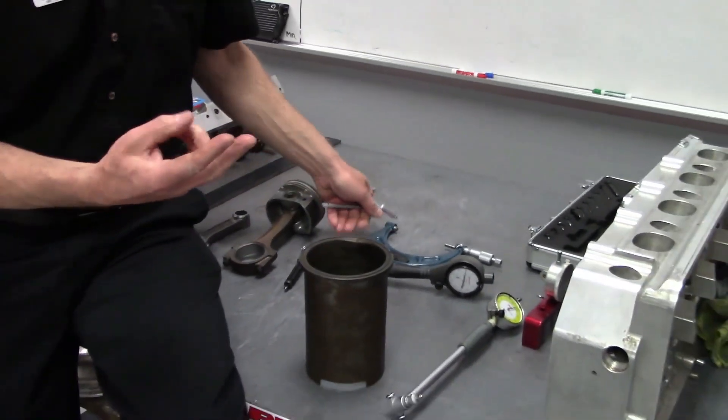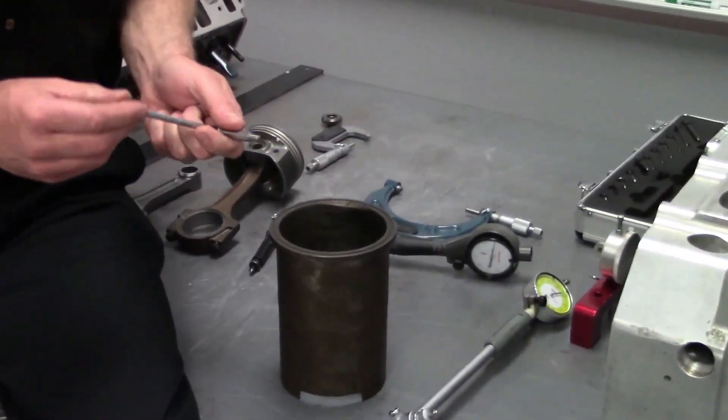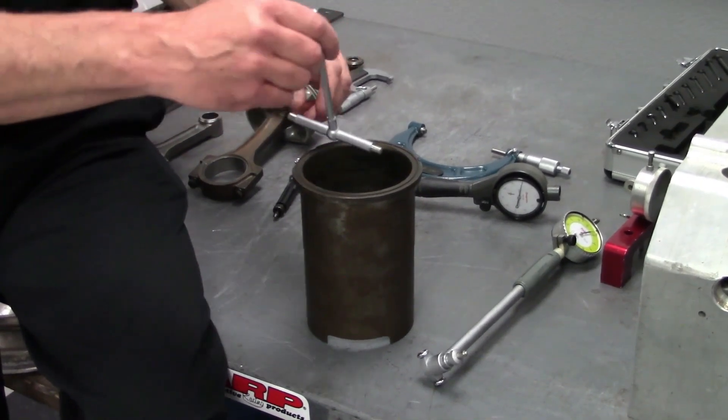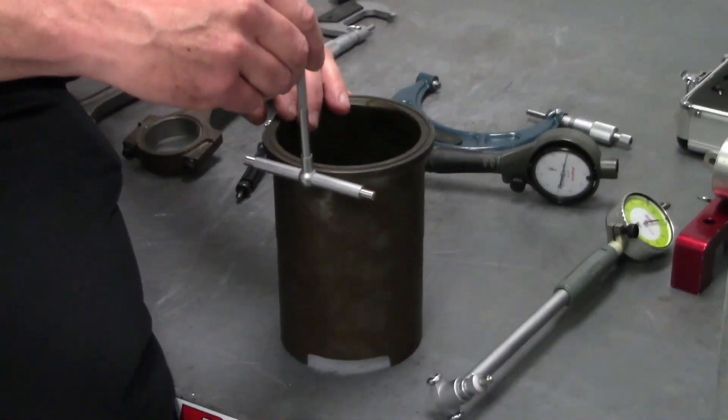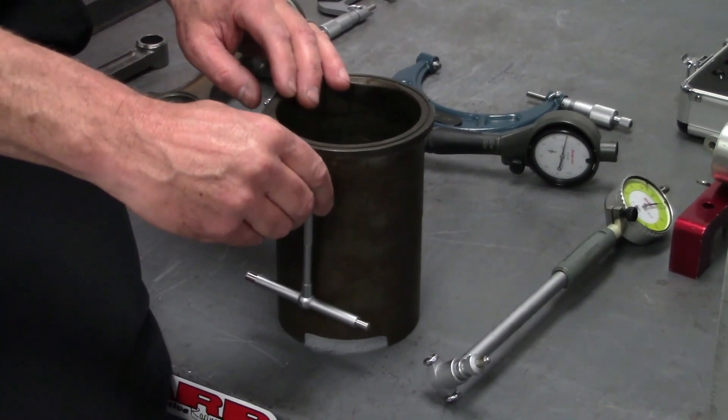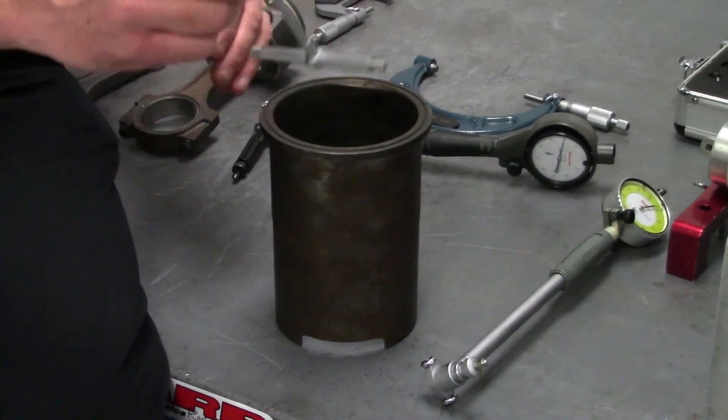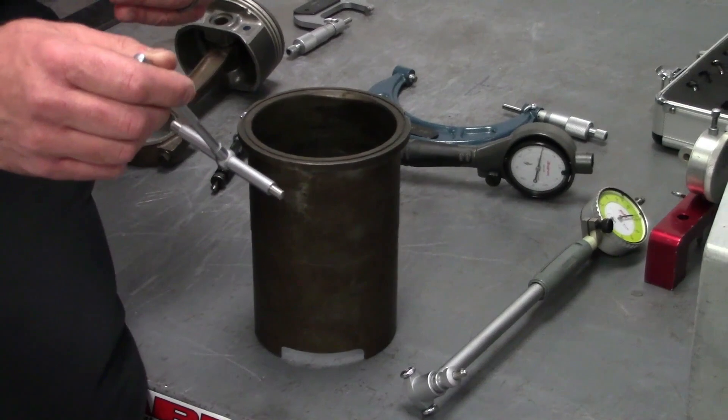The two things that we're going to check are obviously taper and out of round. For taper, we're going to check the bore up here at the top, and then we're going to go to the middle, and then we're going to go to the bottom. We're going to take the smallest and the lowest reading from those three.